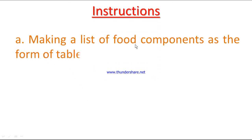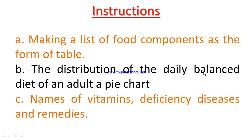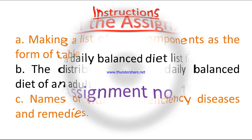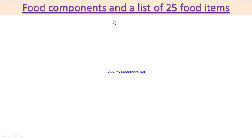Instructions: (a) making a list of food components in the form of a table; (b) the distribution of the daily balanced diet of an adult as a pie chart; (c) names of vitamins, deficiency diseases, and remedies. The title of the assignment is 'Preparing a Daily Balanced Diet List for an Adult', Assignment Number One. Food components and a list of 25 food items follow.